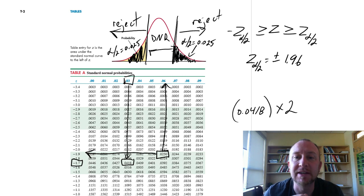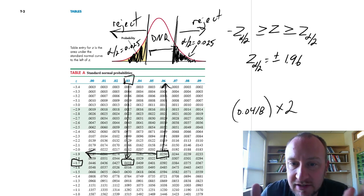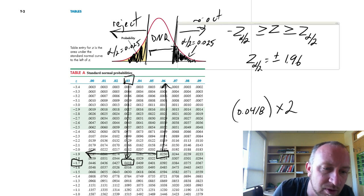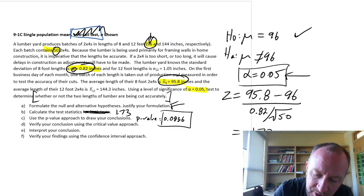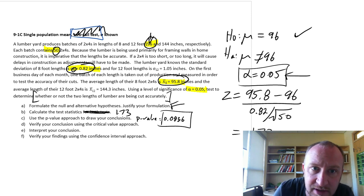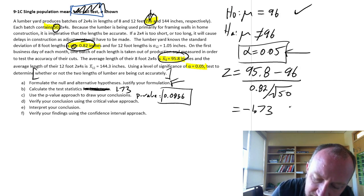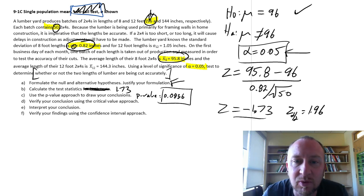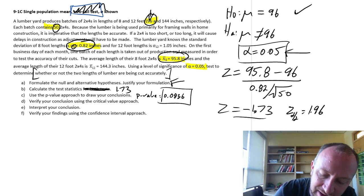So I'll reject if my test statistic is larger than positive 1.96, or smaller than negative 1.96. And so when we come back here, with our test statistic, my critical value z alpha by 2 is 1.96. And here's my test statistic of negative 1.73.